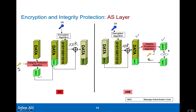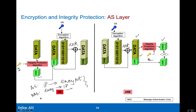Once this matches, you can use the data and go ahead and process it. So at the access stratum, it is first integrity protect, then encrypt—which is the reverse of what happens at the non-access stratum layer, which first encrypts and then integrity protects. This sequence of integrity protection followed by encryption is apparently much more secure.